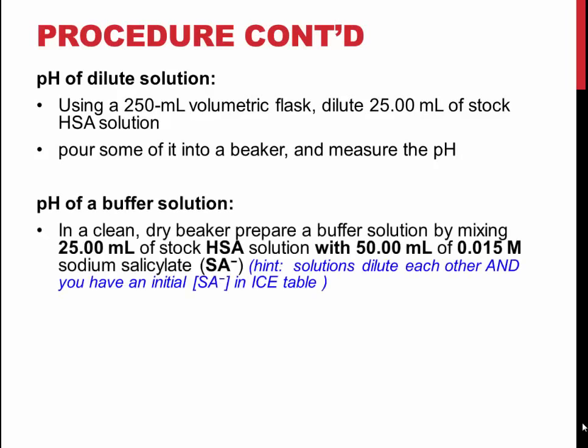Finally, in a clean, dry beaker, prepare a buffer solution by combining 50 mL of a 0.01500 molar sodium salicylate with 25 mL of stock salicylic acid to make a buffer solution. Measure and record the pH and temperature. Note that this will provide you with the initial concentration of SA- which can be used in the ICE table.